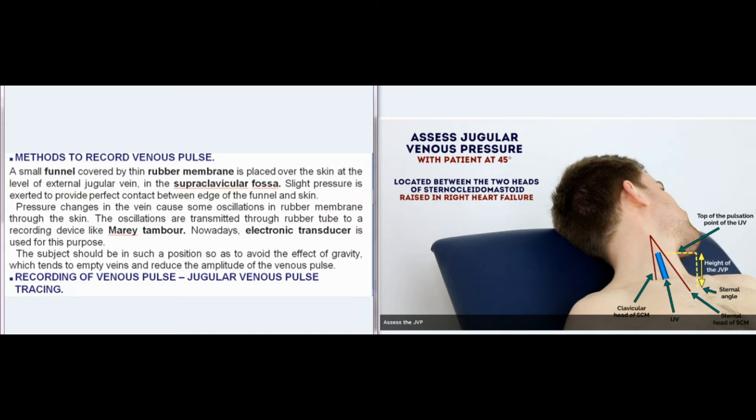Slight pressure is exerted to provide perfect contact between edge of the funnel and skin. Pressure changes in the vein cause oscillations in rubber membrane through the skin. The oscillations are transmitted through rubber tube to a recording device like Marey tambour. Nowadays, electronic transducer is used for this purpose. The subject should be in such a position so as to avoid the effect of gravity, which tends to empty veins and reduce the amplitude of the venous pulse.